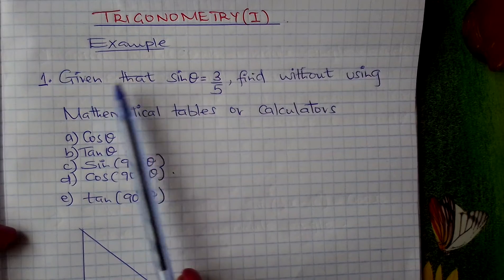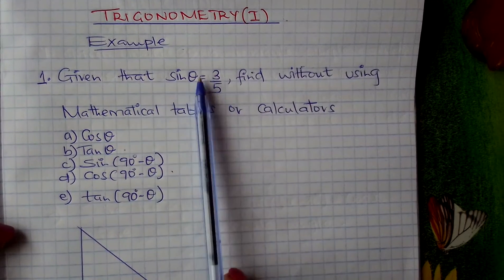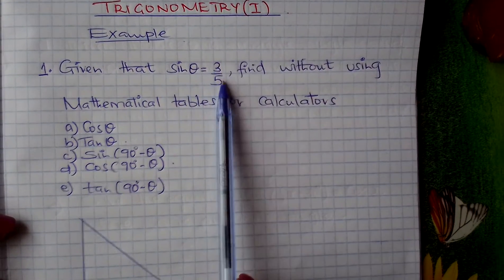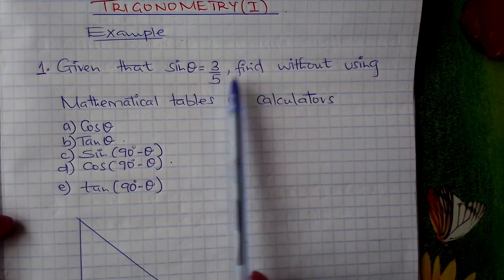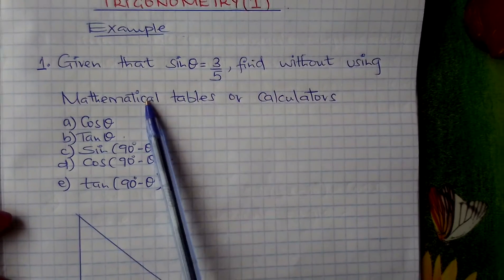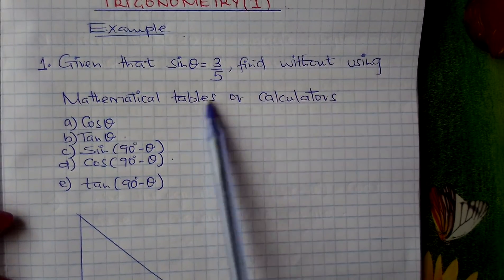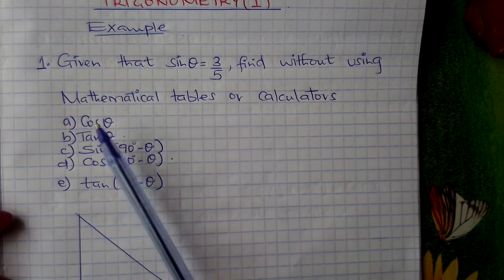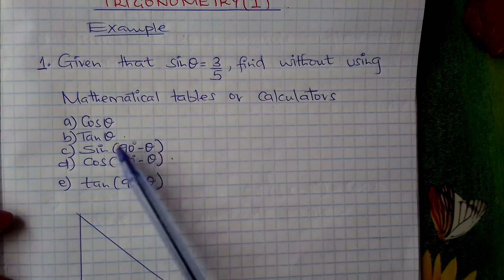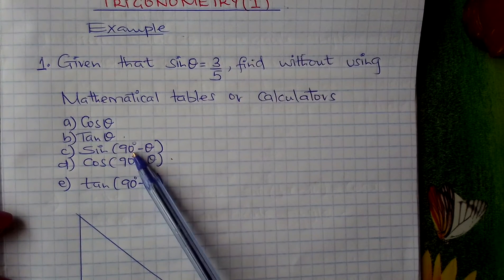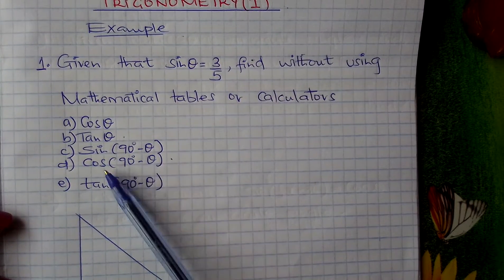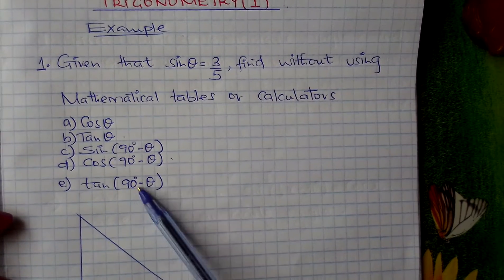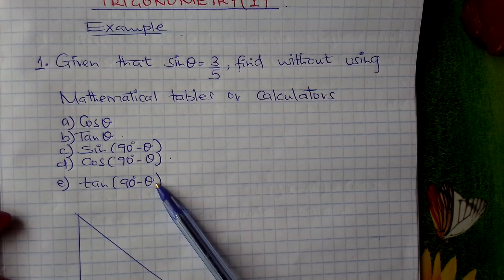You are told that, given that sin theta is 3 over 5, find without using mathematical tables or calculators the following: cos theta, tan theta, sin 90 minus theta, cos 90 minus theta, and tan 90 minus theta.